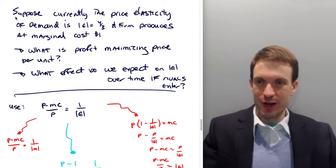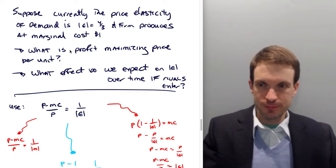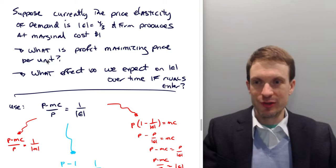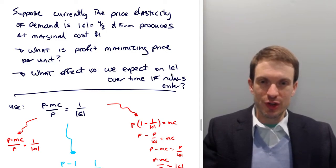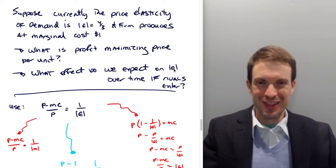Suppose we have the following setup. Currently the price elasticity of demand is going to be absolute value of epsilon equals four thirds, and the firm produces at marginal cost of a dollar. We want to find the profit maximizing price per unit, and we want to know what effect do we expect on the price elasticity of demand over time if rivals enter.